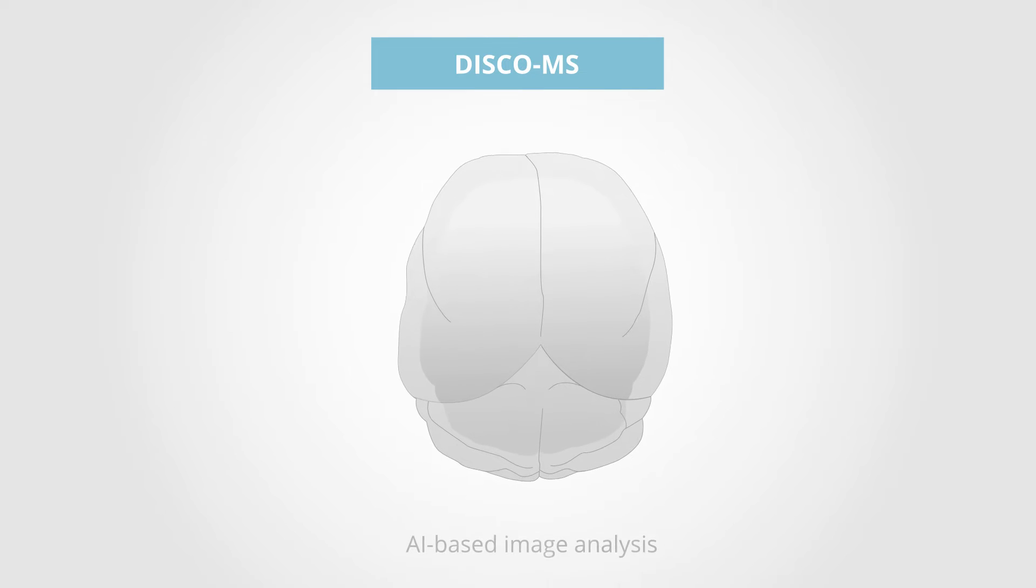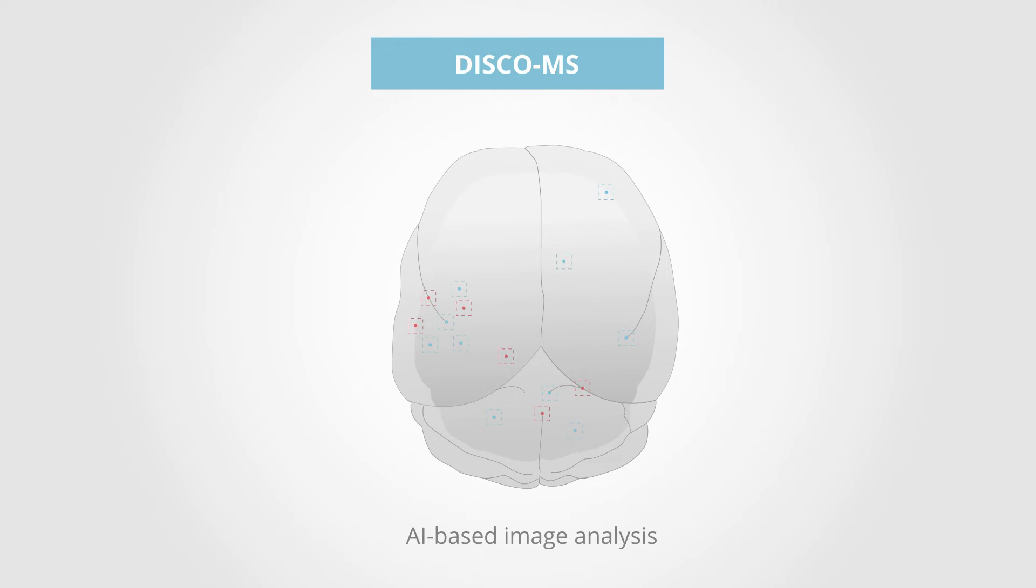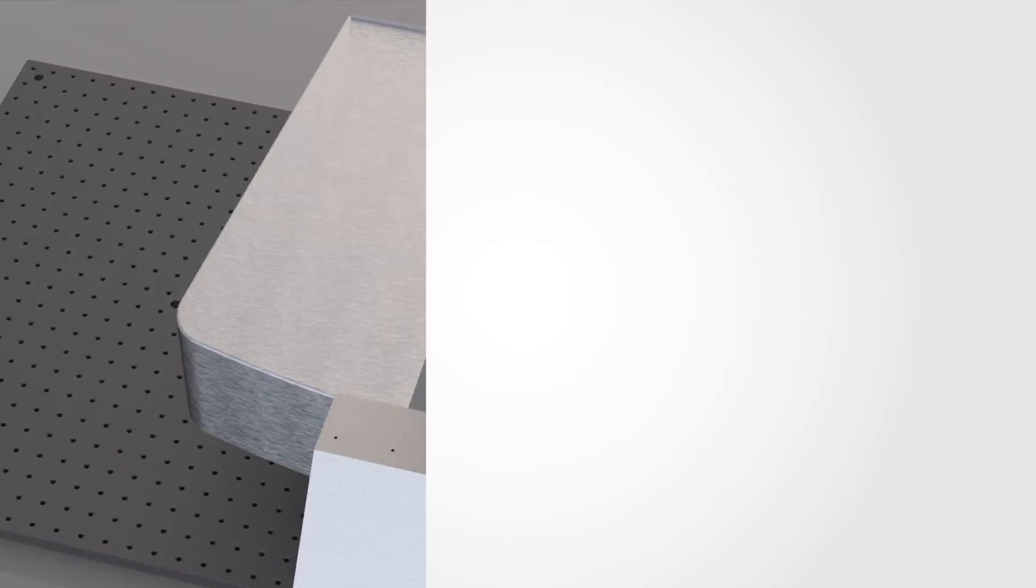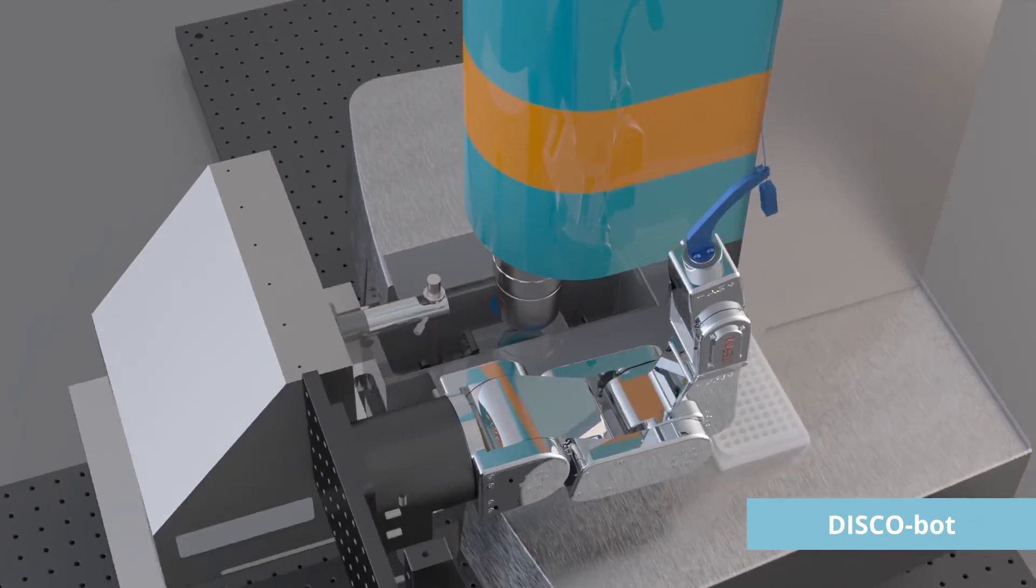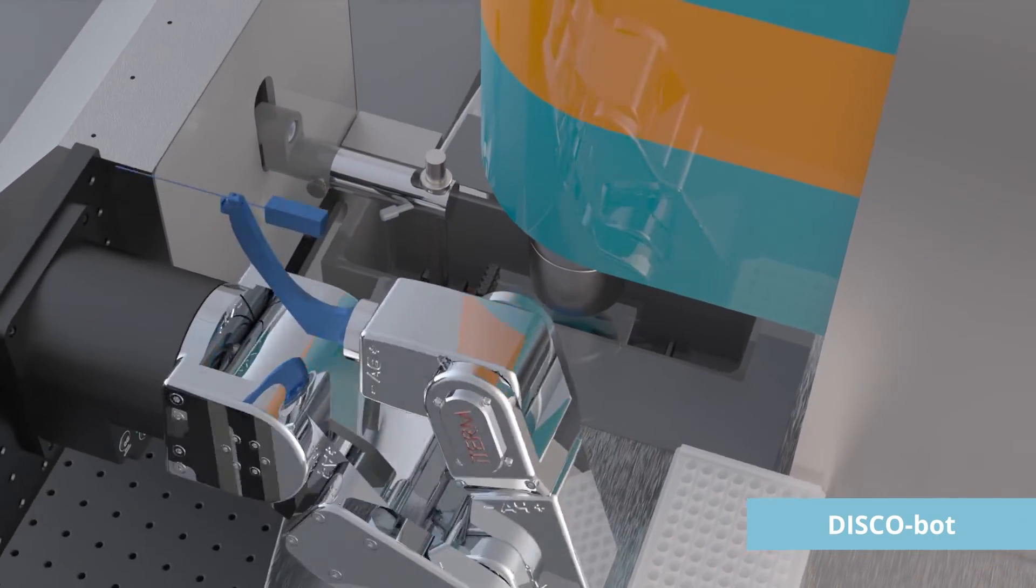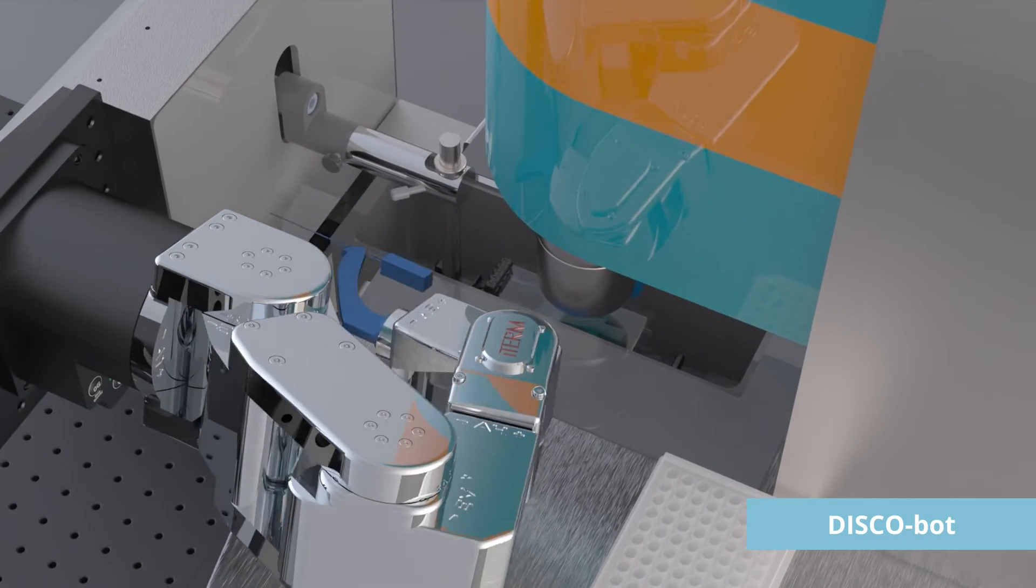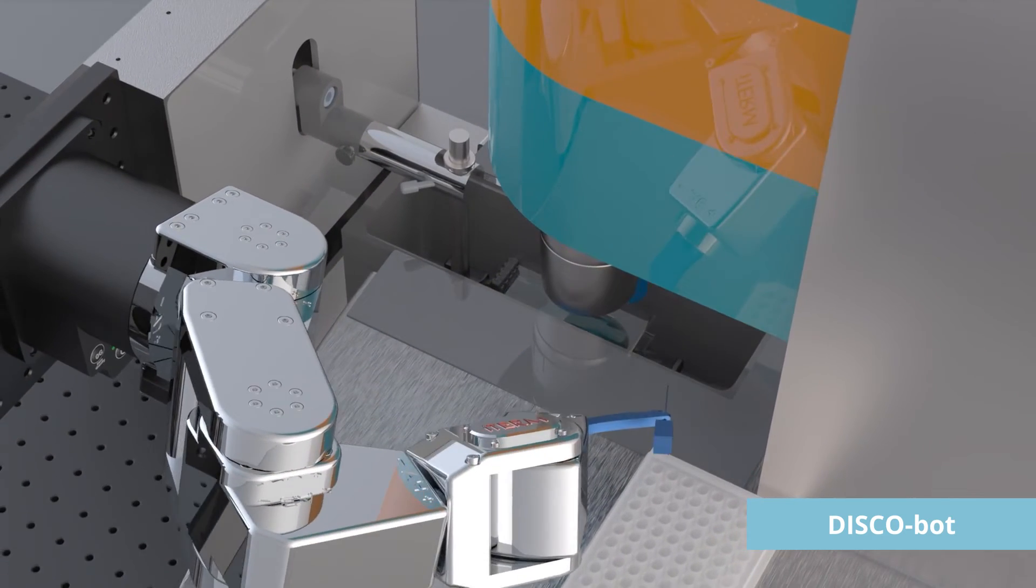To make our approach more scalable, we used AI-based image analysis to identify tissue regions. Furthermore, a robot-aided extraction method, called DISCO-BOT, isolates small regions for mass spectrometry-based proteomics.